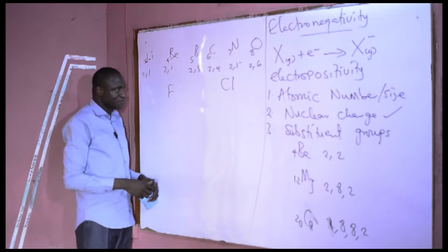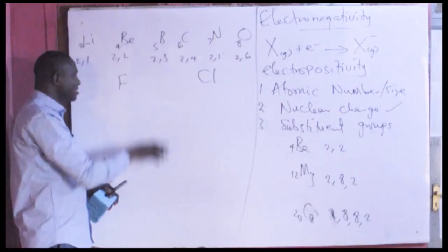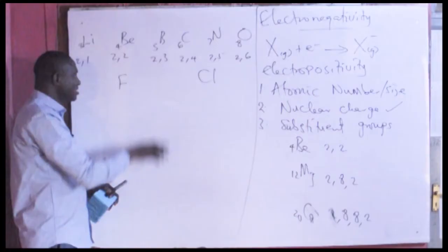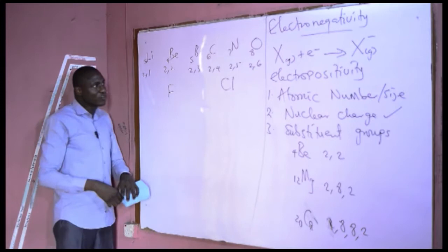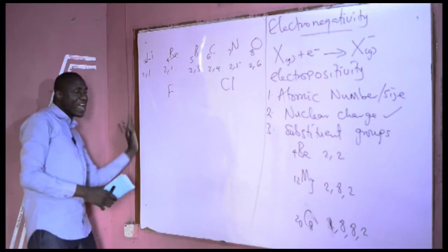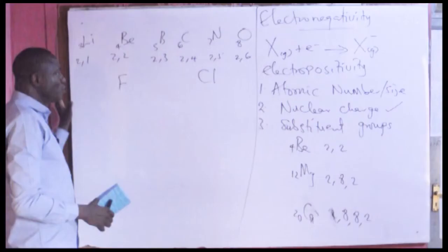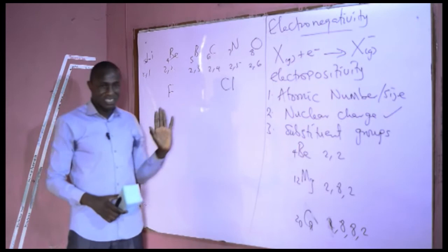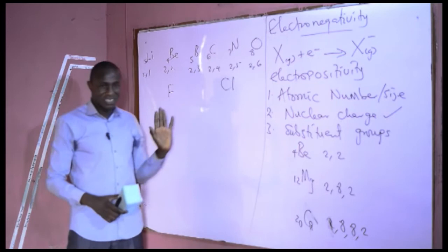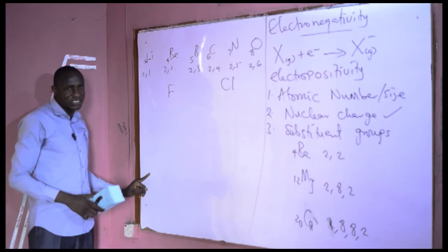Since electronegativity decreases down the group, in Group 17 the order is: fluorine (highest), followed by chlorine, bromine, iodine, and astatine. In Group 1, which is the first group in any period, the Group 1 element has the least electronegativity value in its period, while Group 17 has the highest. Since electronegativity decreases down the group, francium or cesium has the least electronegativity value, while fluorine has the highest.